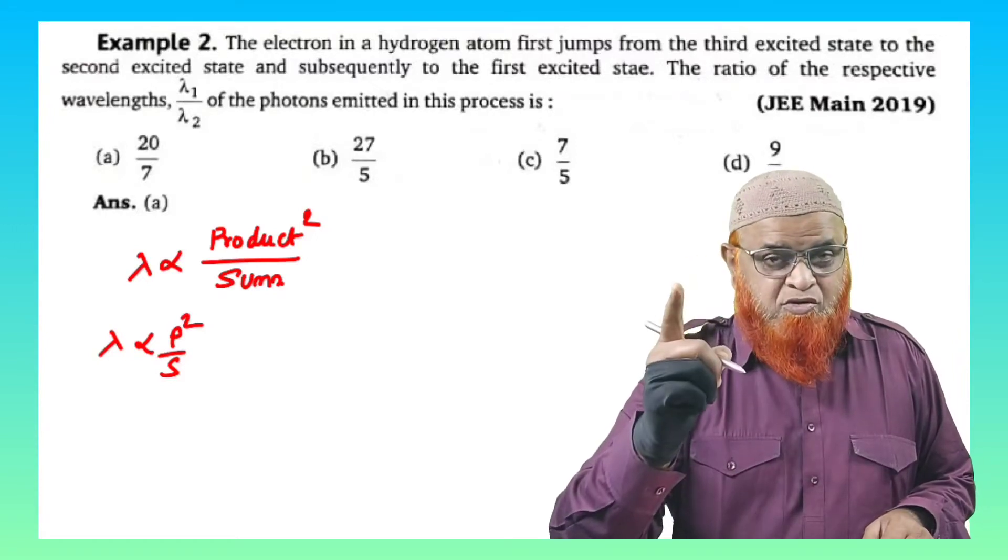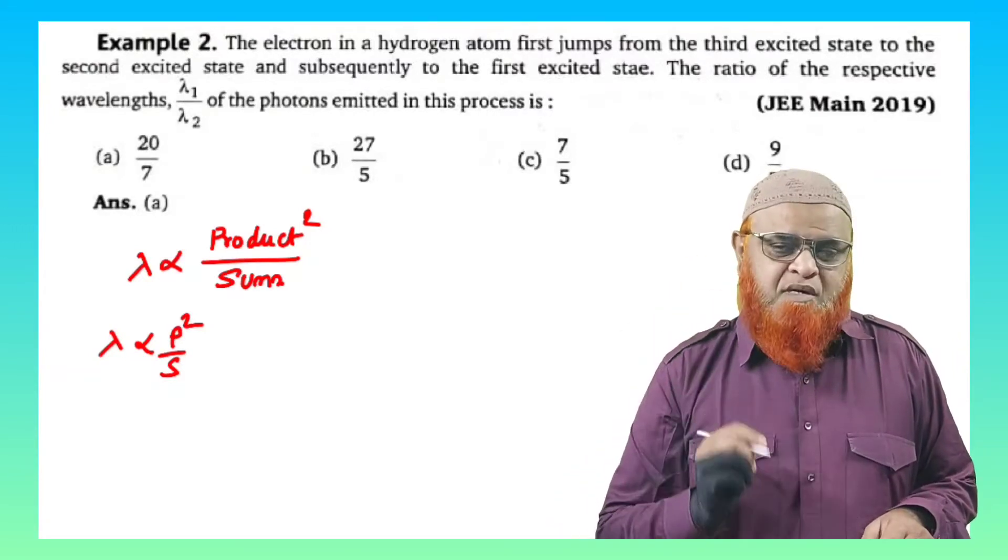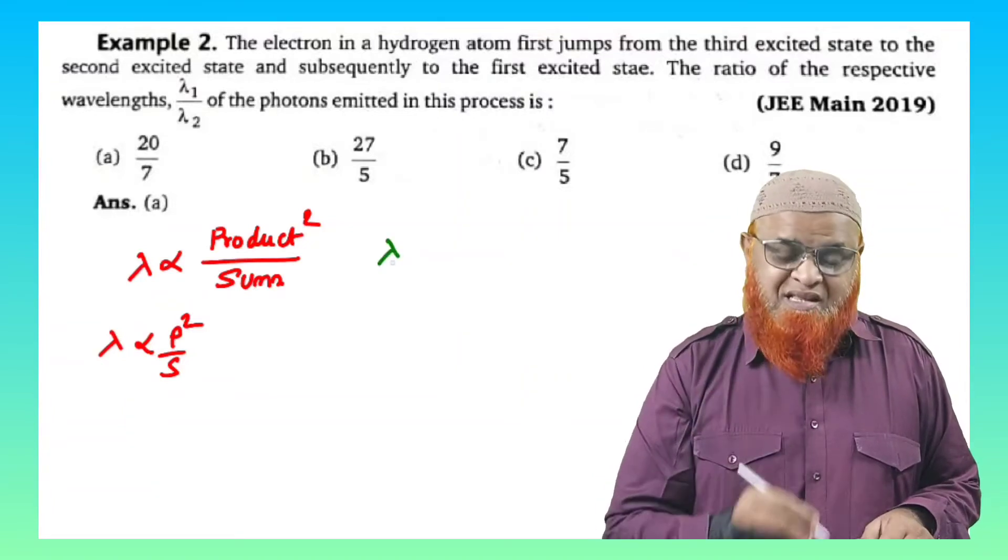Wavelength is directly proportional to product whole square divided by sum. Then you can write this like this.